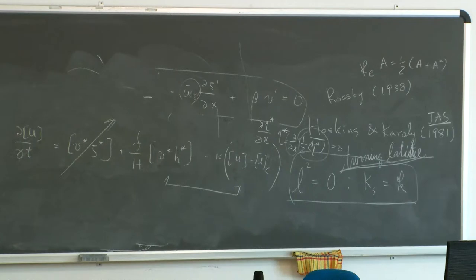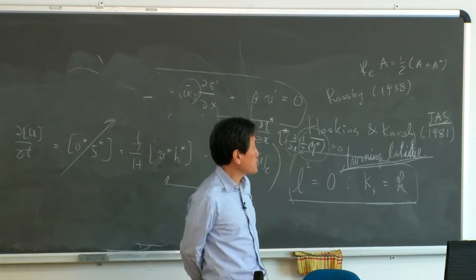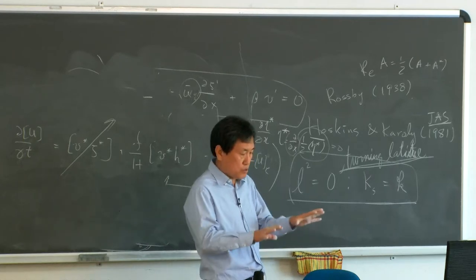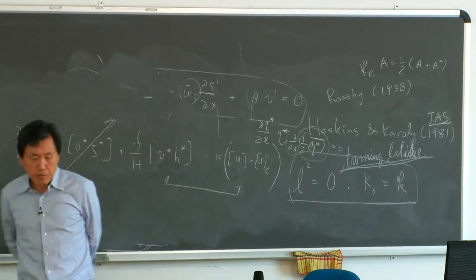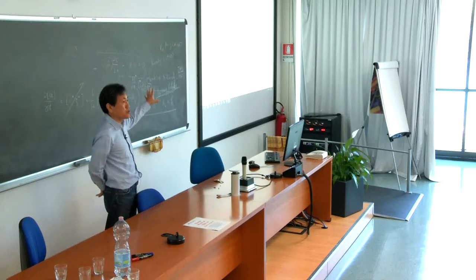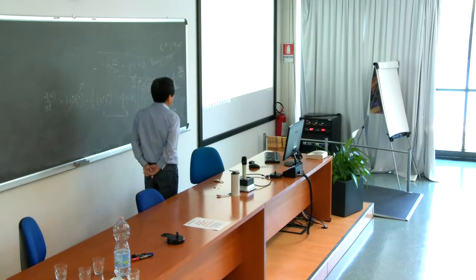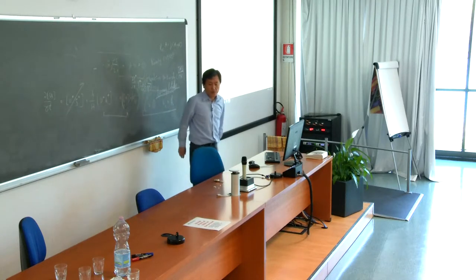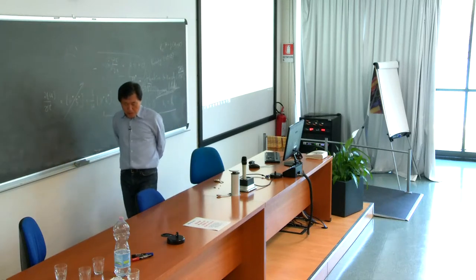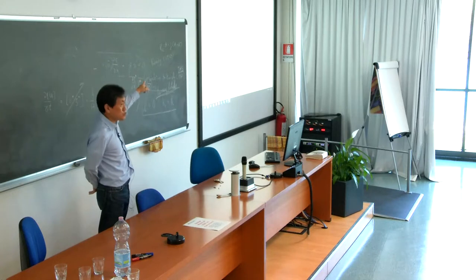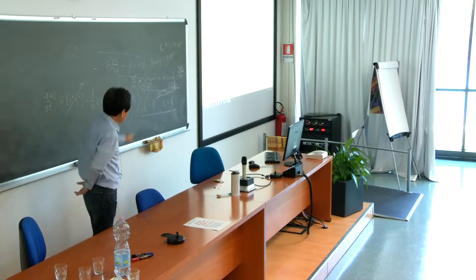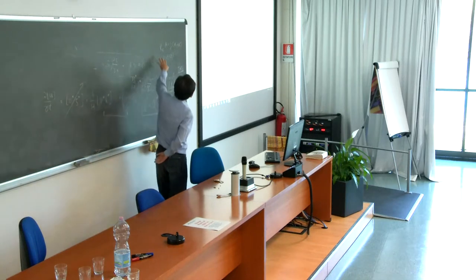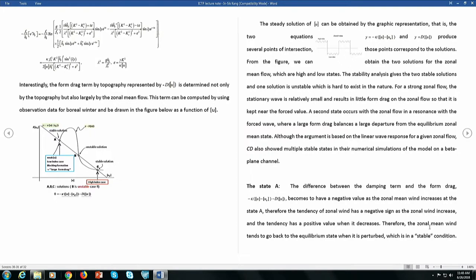Charney and DeVore also showed in their numerical solution that two solutions can exist. But there are many arguments about this multiple equilibrium theory. The multiple equilibrium theory I present here is very elegant and straightforward — nothing is difficult. You can easily derive these equations following this lecture note.